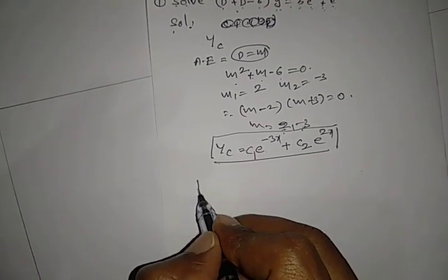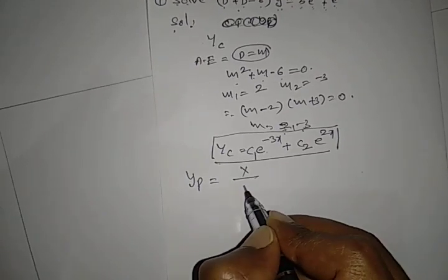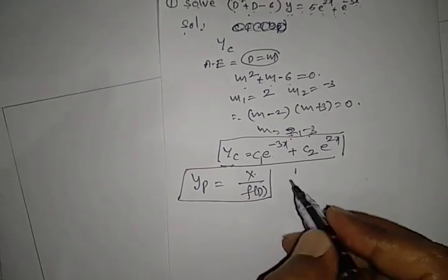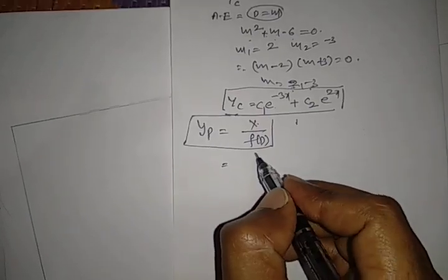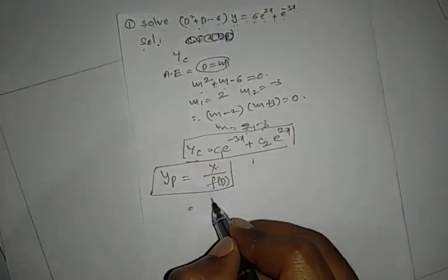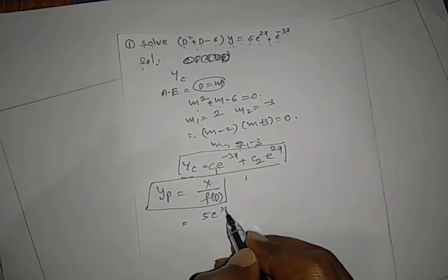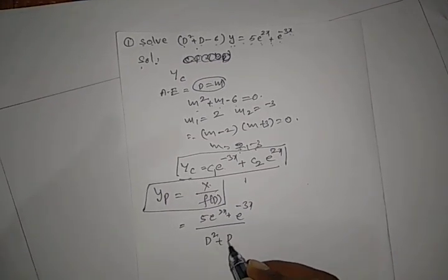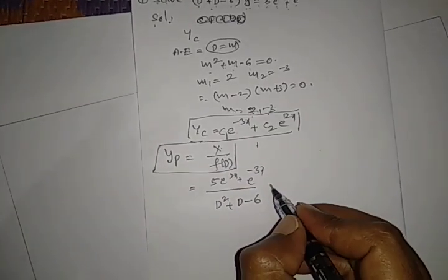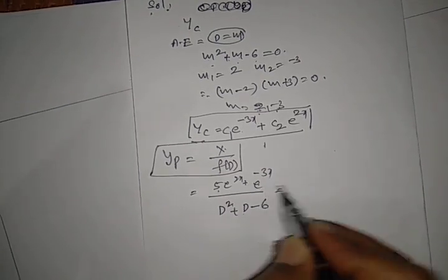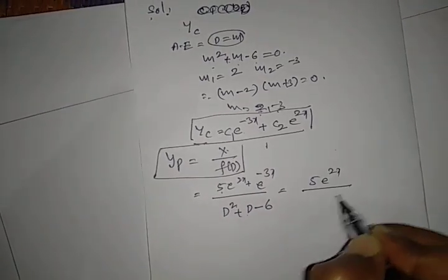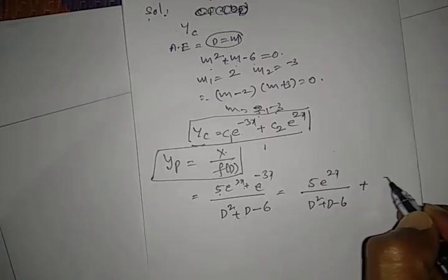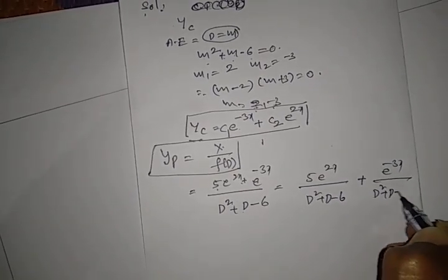Now find the particular integral yp. The formula is yp = (1/f(D)) × (RHS), where f(D) is the LHS operator. Split the denominator for each term: yp = 5e^(2x) / (D² + D - 6) + e^(-3x) / (D² + D - 6).